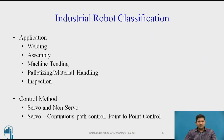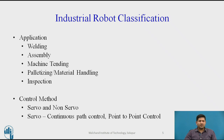Other ways of classifying robots is based on application — so if they are used for welding, you can call them welding robots. Similarly, you have assembly robots, machine tending robots, palletizing and material handling robots, and inspection robots. Another way to classify robots, quite popular in the past, was based on control method — servo and non-servo robots. I've included this because most textbooks tend to be dated and include this classification, but in the modern context I see this as redundant because all robots are closed-loop servo robots.